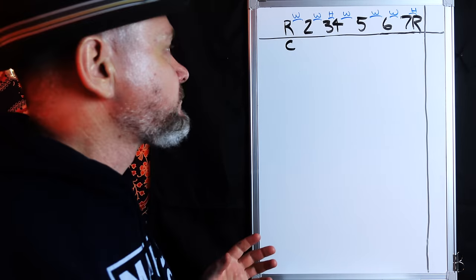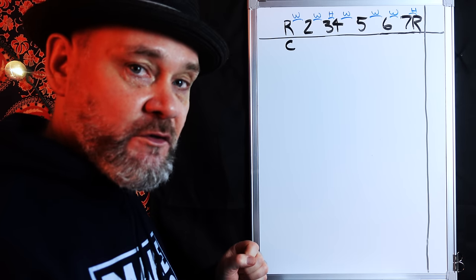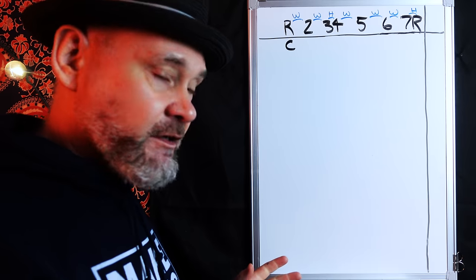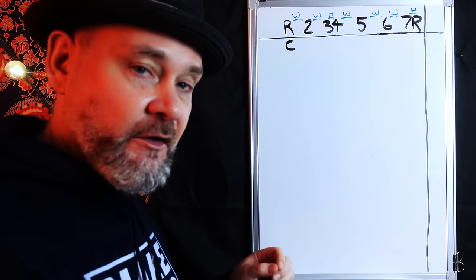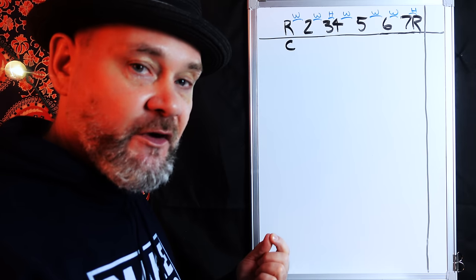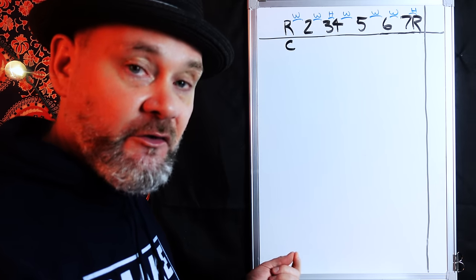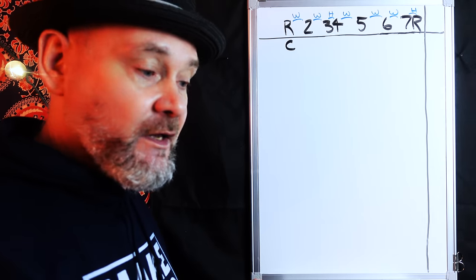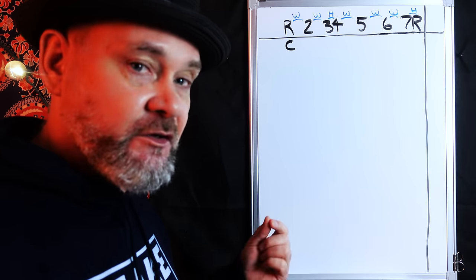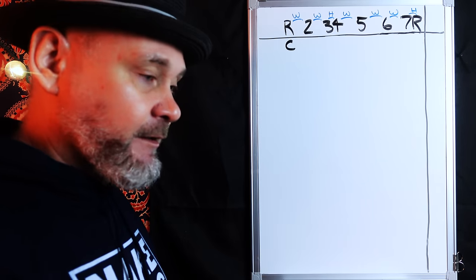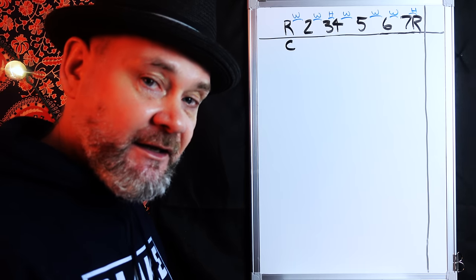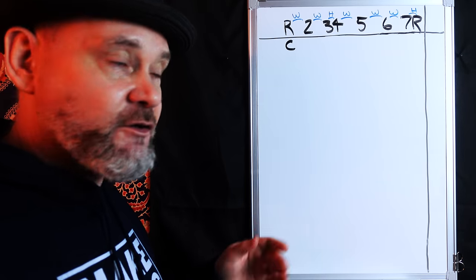Just in case, for those of you that don't know what a whole step or a half step is, I'm going to quickly explain it. On a guitar, if you move two frets in either direction from wherever fret you're on — that's a whole step. So a whole step on guitar is moving two frets. On piano, if you're going from one white key to another white key and it has a black key in between, that is a whole step.